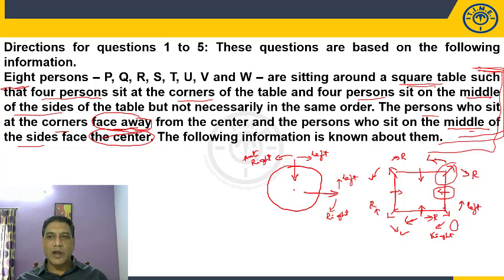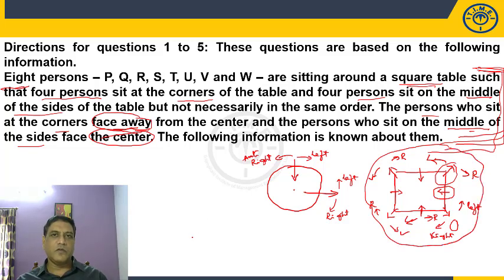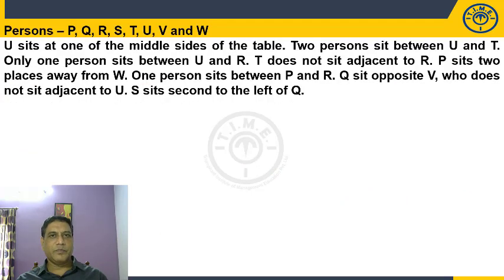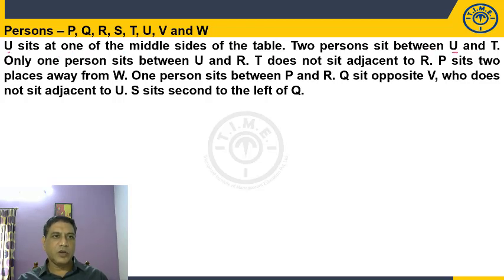The initial few lines tell us what kind of arrangement we are going to make — this takes about 15 to 20 seconds at the most. Once we get that arrangement, we start filling in the information. U is at one of the middle of the sides. Two persons sit between U and T. Only one person sits between U and R. If you start solving using U, you can use the first three statements consecutively.